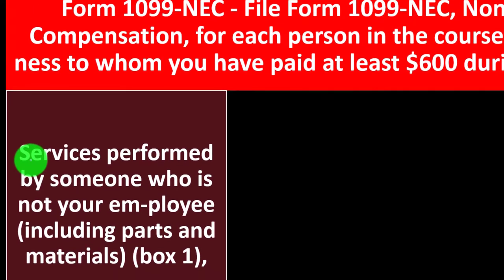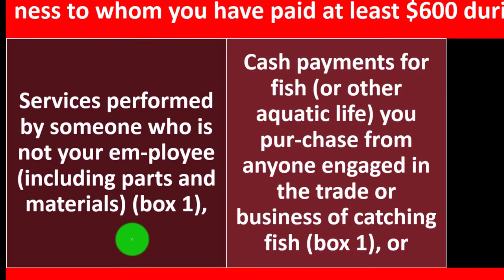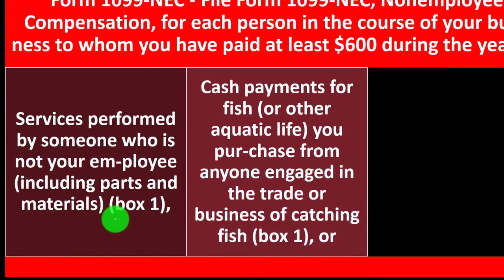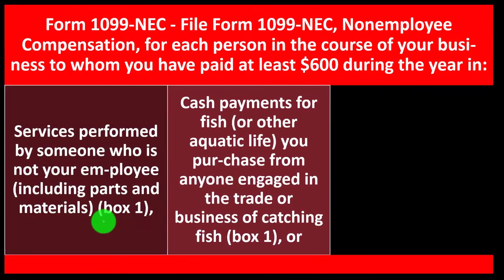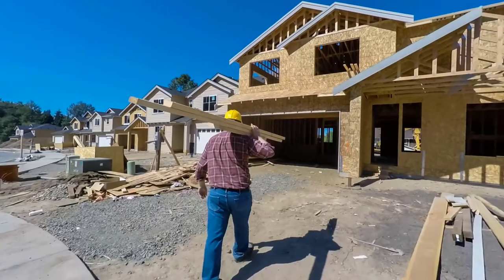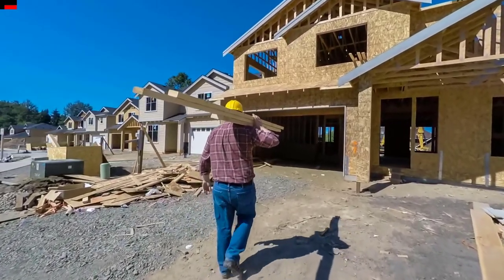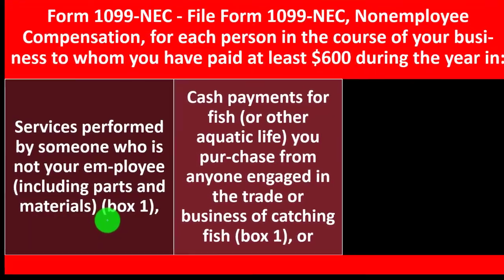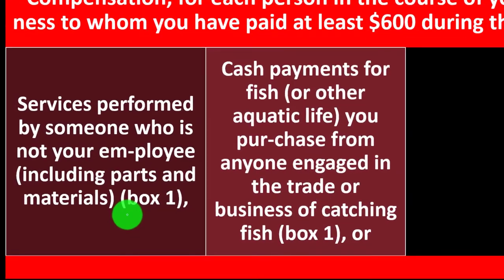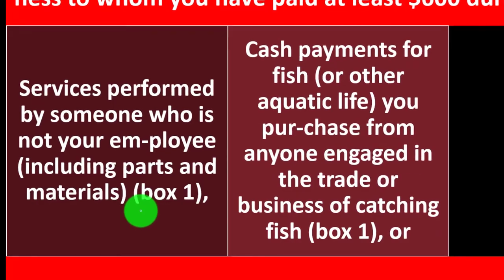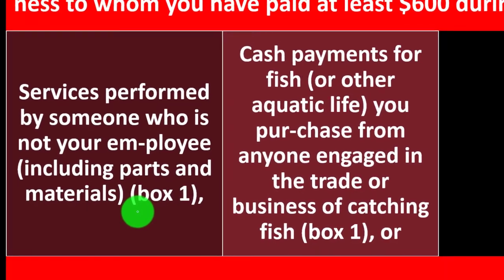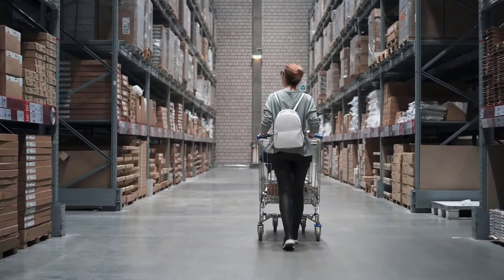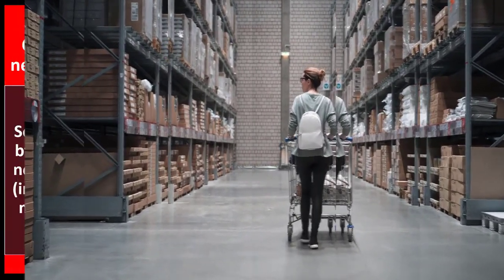Box one includes parts and materials — so you're including anything you paid them, whether for their labor or for them to spend on parts and materials, because as a contractor they are in charge of purchasing their own parts and materials. If you were the one purchasing the parts and materials, then you would be like the employer. So the payments are income to them, and then they get the deduction of whatever they had to spend that money on in order to get the job done — those are their expenses.